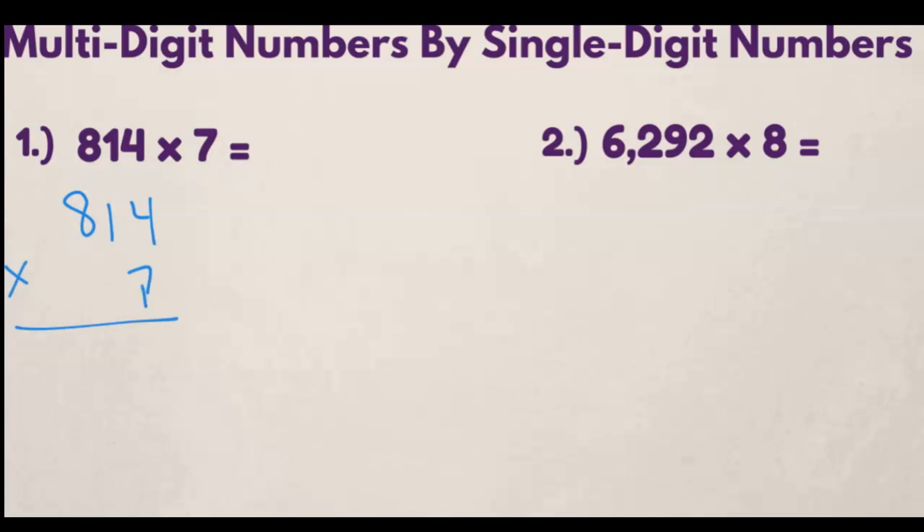And we want to make sure that we line up our digits in the one space. What we're going to do is we're going to start with the ones and then we're going to multiply going to the left.